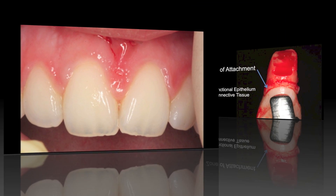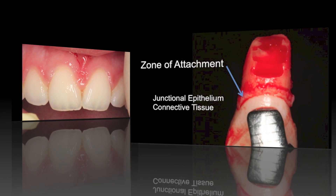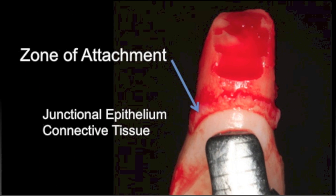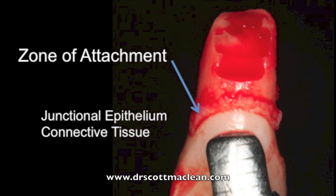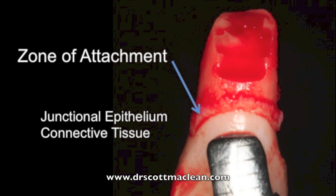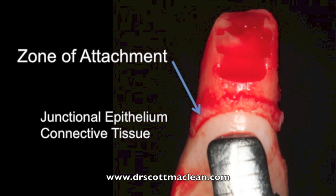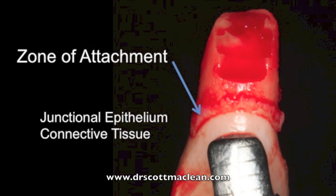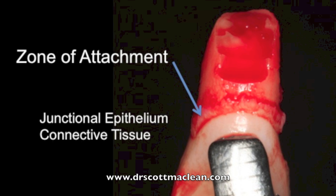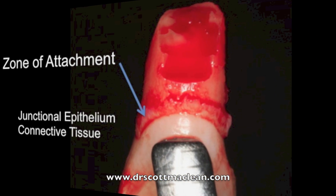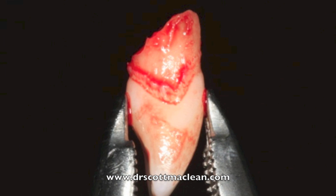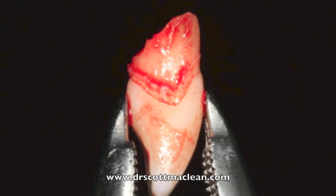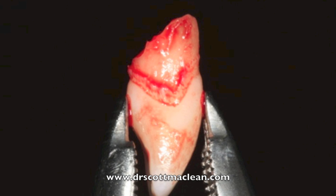We have to be a little careful when we're making our temporary as well. You see a nice zone of attachment with the junctional epithelium and connective tissue. If we look at this from a different angle, what you can see is that this is really sealed off the area, but this fracture is above this area, which means that over time this is going to abscess and have problems.